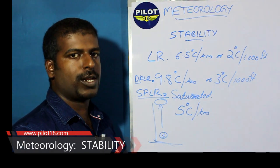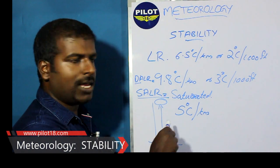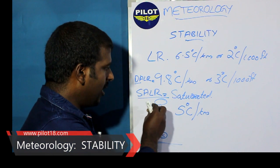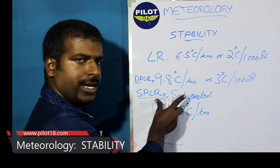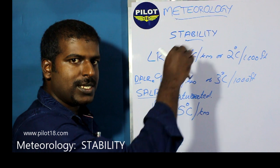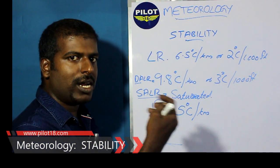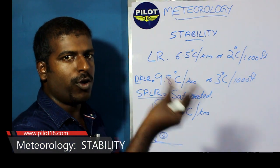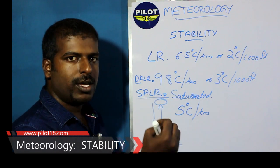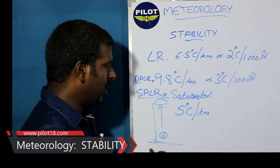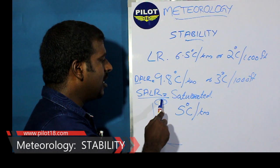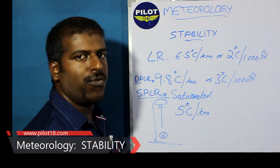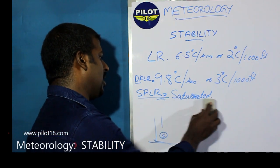The saturated adiabatic lapse rate is 5 degrees Celsius per kilometer. A parcel of saturated air is lifted adiabatically and expands due to lower pressure, so a temperature drop occurs. When temperature drops, condensation occurs because air can hold more water vapor when it is hot — when cooled, condensation will occur. As a result, the temperature drop is not 9.8 degrees Celsius but only 5 degrees Celsius per kilometer — that is called saturated adiabatic lapse rate.